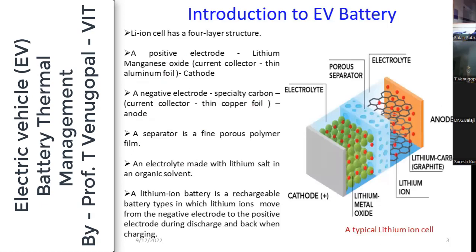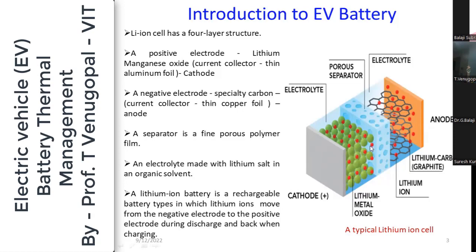Most EV batteries are lithium-ion batteries with a four-layer structure: a positive electrode (cathode) containing lithium cobalt oxide or lithium manganese oxide, an aluminum foil current collector, a negative electrode (anode) with a copper foil current collector containing graphite, a porous polymeric separator between anode and cathode, and an electrolyte medium — a liquid lithium salt in an organic solvent.